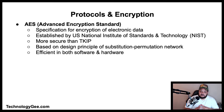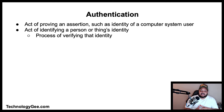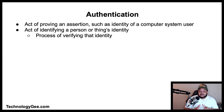Now let's talk about authentication. Authentication is the act of proving an assertion, such as the identity of a computer system user. In contrast with identification — the act of indicating a person or thing's identity — authentication is the process of verifying that identity. There are four types of authentication methods used for wired and wireless networks.